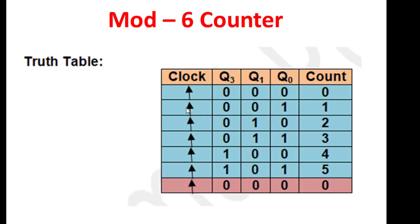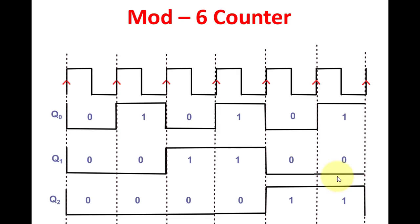The truth table for mod-6: the counts are 000, 001, 010, 011, 100, 101 — that is 0 through 5, giving six counts — then it resets to 000. The waveform of the mod-6 counter starts at 000, then 001, 010, 011, 100, 101, and repeats until the counter is stopped.